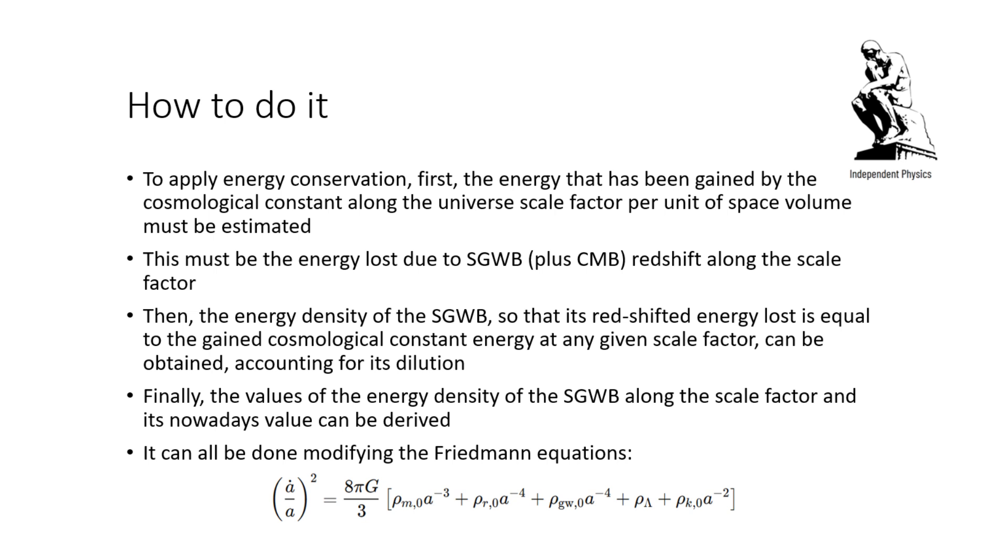The energy that has been gained by the cosmological constant along the universe's scale factor by unit of volume space must be estimated first. This must be the energy lost due to the stochastic gravitational background plus the CMB redshift along the scale factor. Then the energy density of the stochastic gravitational wave background so that its redshifted energy lost is equal to the gain cosmological constant energy at any given scale factor can be obtained, accounting for its dilution.